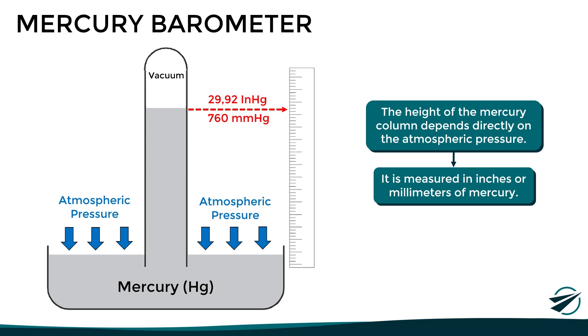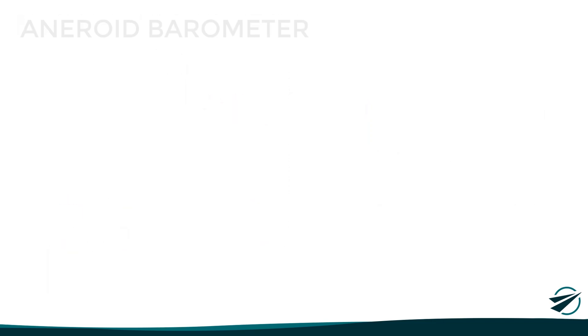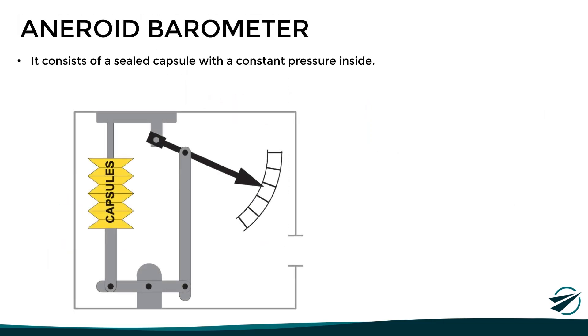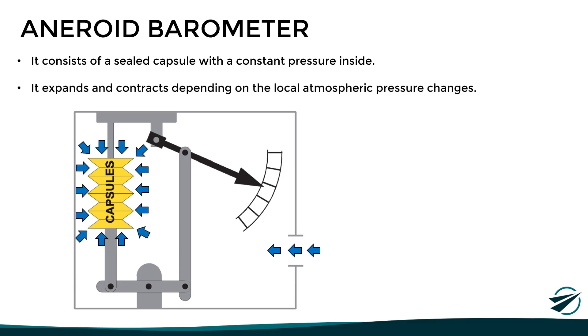So, now that we have seen how a mercury barometer works, let's move on to the aneroid barometer. This instrument consists of a sealed capsule with a constant pressure inside. And it is designed so that atmospheric pressure can enter the instrument and try to compress the capsule. This way, the capsule will expand and contract depending on atmospheric pressure changes. And since this capsule is connected by means of gears to the needle on the dial, the corresponding value of the atmospheric pressure will be indicated. And as an important fact, this exact same principle is the one used by barometric altimeters. But instead of indicating the pressure, they are calibrated to indicate the corresponding altitude.